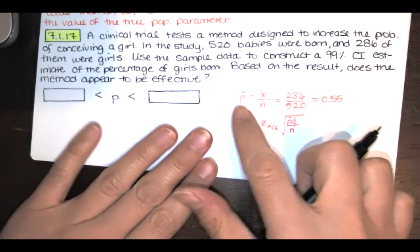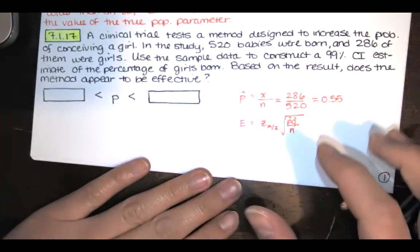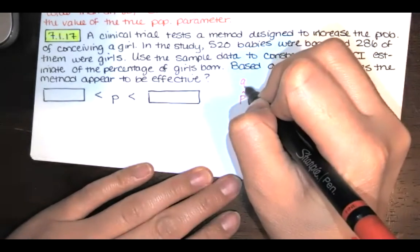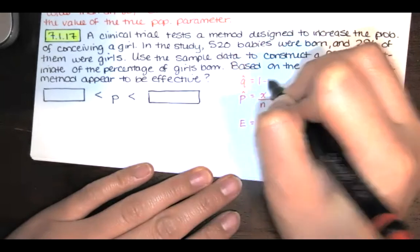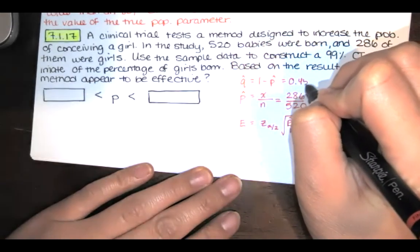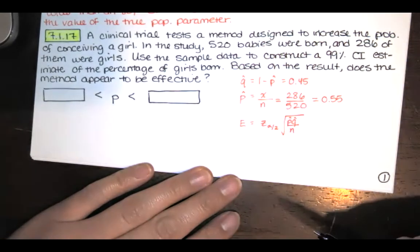Now, if P hat is the proportion in our sample that were girls, Q hat is everyone else. It's 1 minus P hat or 0.45. Our sample size is 520.